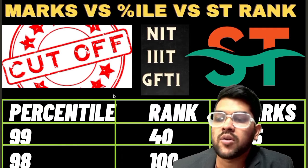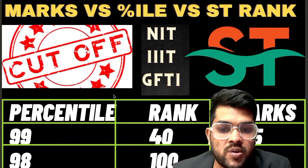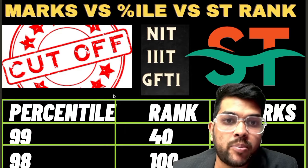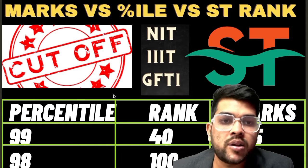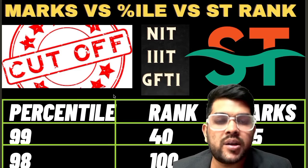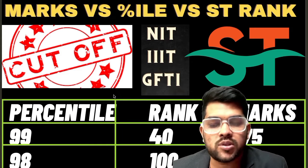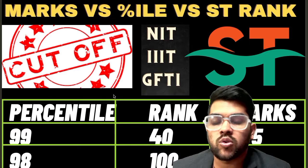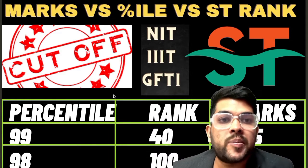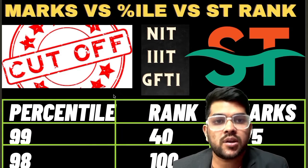For 99 percentile, your marks will be 175. These marks are considered for the first attempt and a moderate paper. If the paper is easy or hard, marks will change by 5 to 7 accordingly. For the second attempt, I will provide a separate video. The ST category rank for 99 percentile will be 40, and this rank will be used for seat allocation in the counseling process.